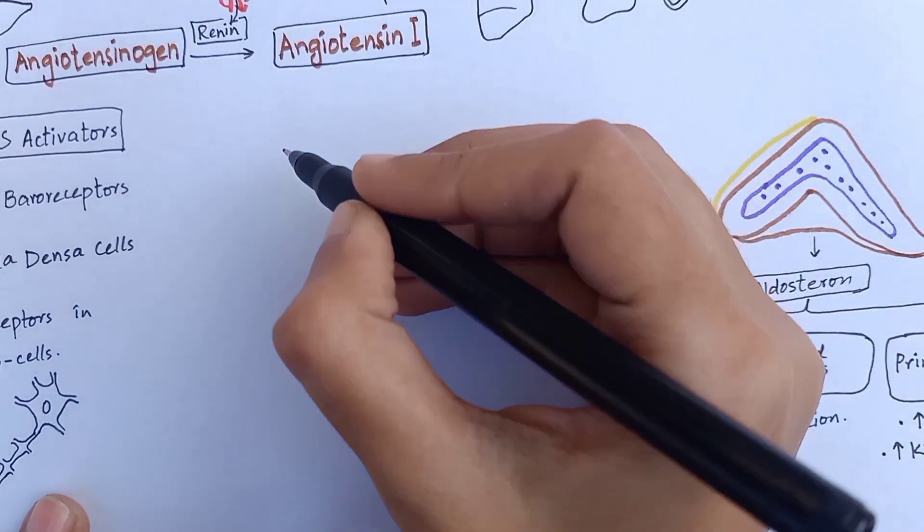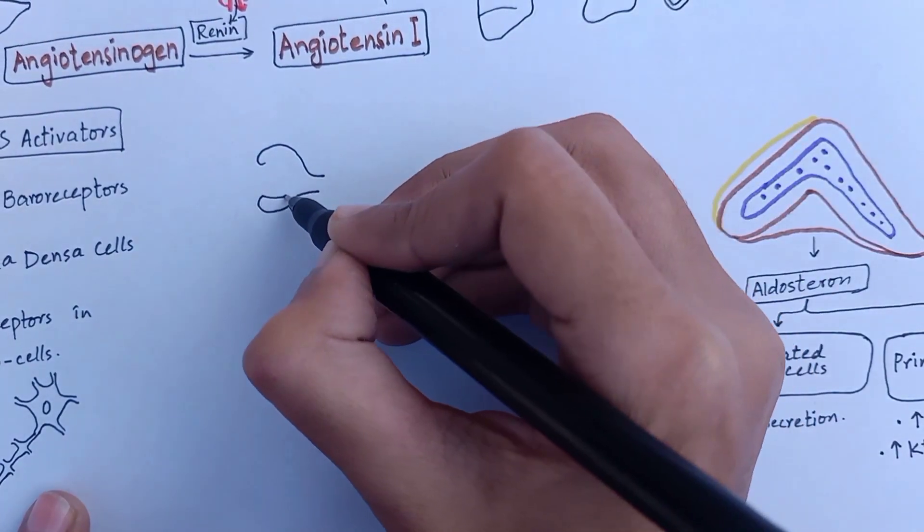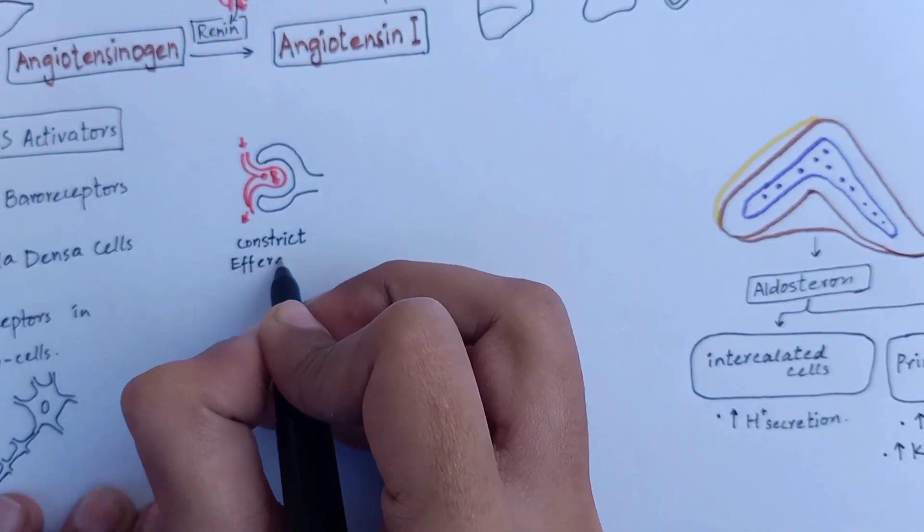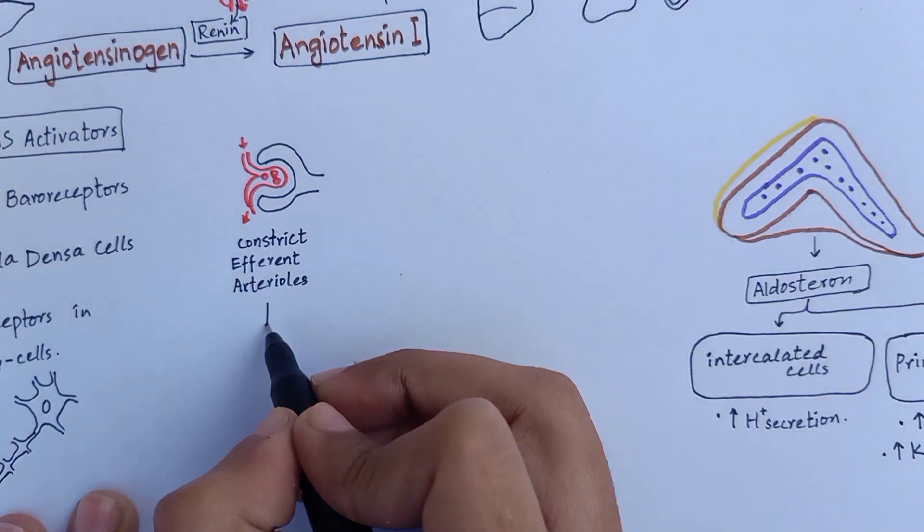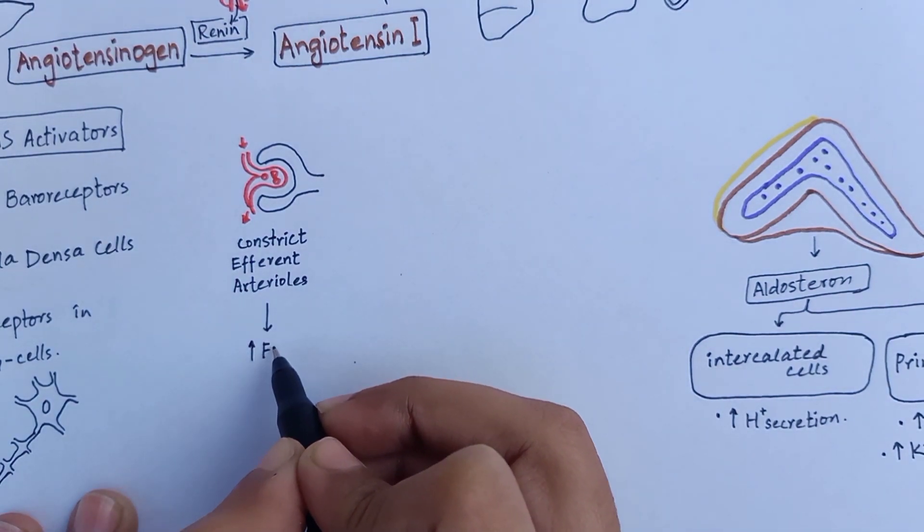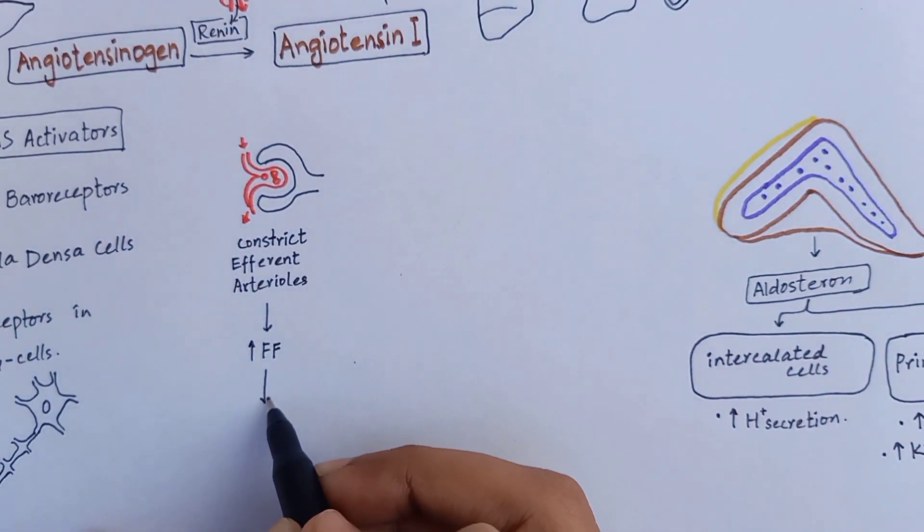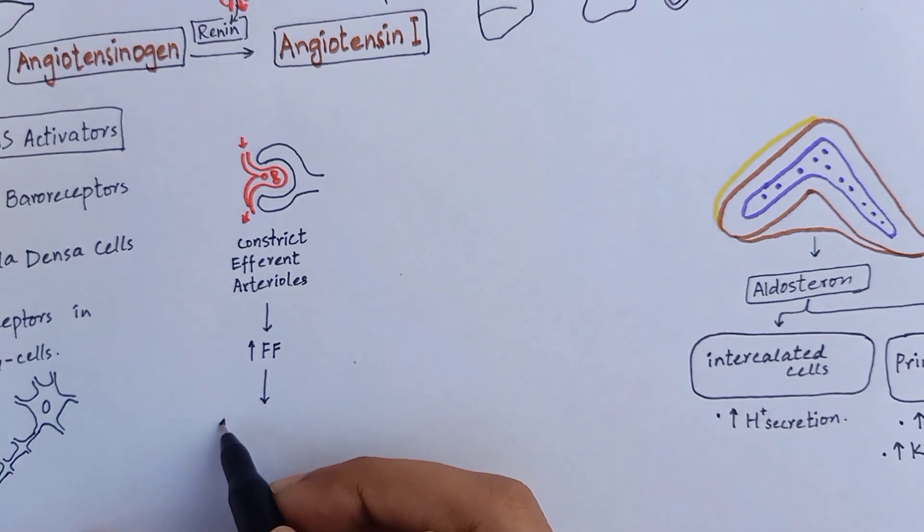The first renal effect is constriction of efferent arterioles. Efferent arteriolar vasoconstriction raises filtration fraction in glomerulus, which causes reduced hydrostatic pressure and increased colloidal osmotic pressure in peritubular capillaries. Both of these forces favor increased tubular reabsorption of sodium and water, hence increased blood pressure.